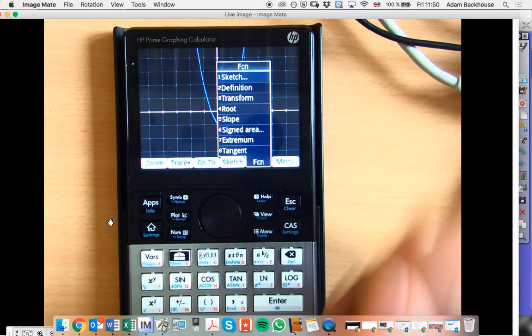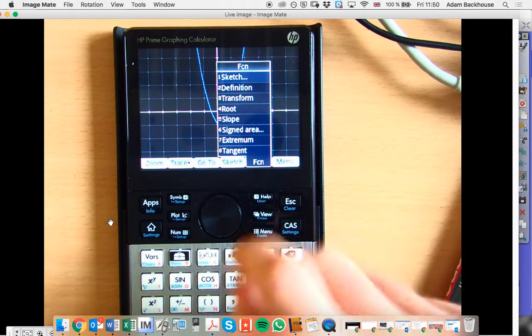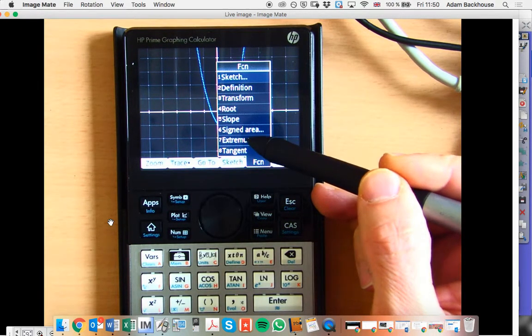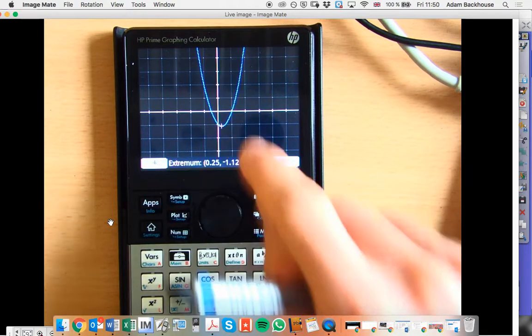This brings up a list of useful features that we can find. The one that we're concerned with at the moment is extremum, option number 7. And this finds us our maximum or minimum.